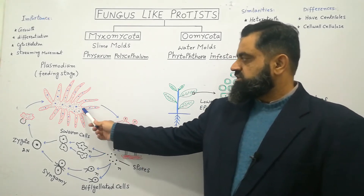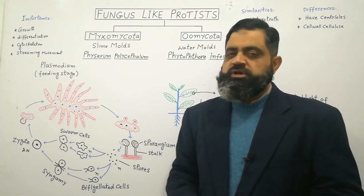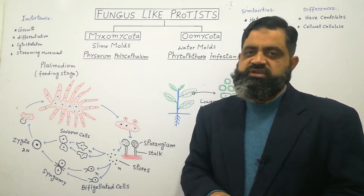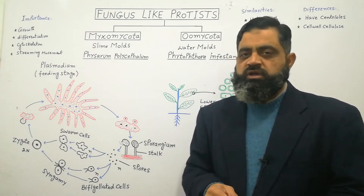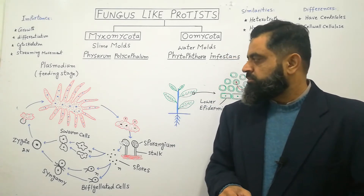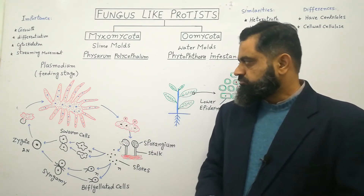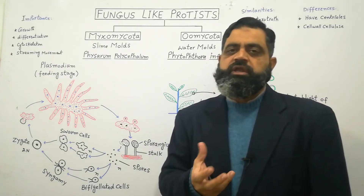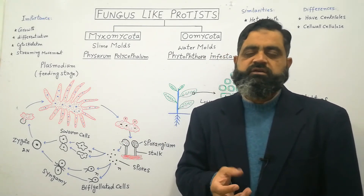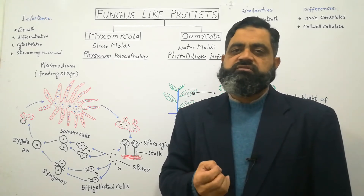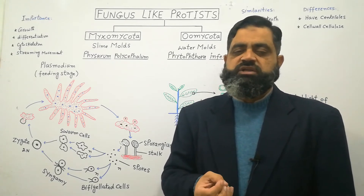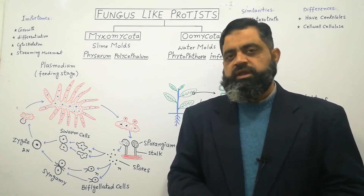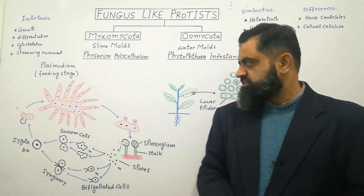During the feeding stage, its cytoplasm can grow up to 30 cm or 1 foot and can develop into a very large mass. During feeding, as it creeps along decaying logs and litter, it feeds on bacteria, yeast, and other microorganisms present in the dead and decaying organic matter.